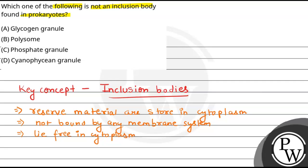Now, if we talk about inclusion bodies, what is our example? They can be glycogen granules or phosphate granules or cyanophycin granules. These granules are examples of inclusion bodies which are found in the prokaryotes.